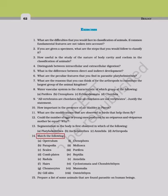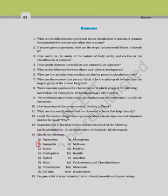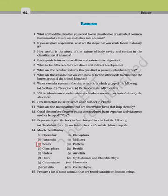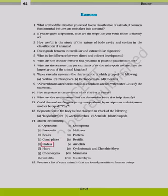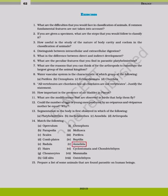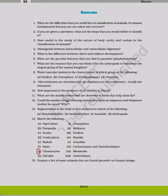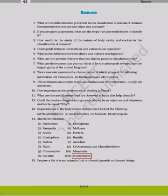14. Match the following: (a) Operculum (b) Parapodia (c) Scales (d) Comb plates (e) Radula — matched with: 1. Ctenophora 2. Mollusca 3. Porifera 4. Reptilia 5. Annelida; (f) Hairs — Mammalia; (g) Choanocytes — Porifera; (h) Gill slits — Cyclostomata and Chondrichthyes; Osteichthyes. 15. Prepare a list of some animals that are found parasitic on human beings.